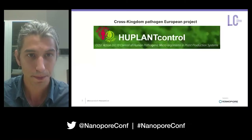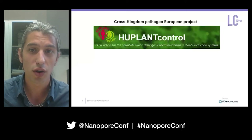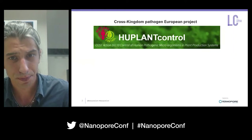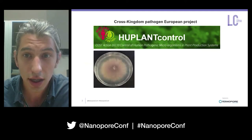Everything starts with a European project called U-Plant Control. This project is finalized to create a pan-European network of scientists who study pathogens able to move from agricultural products to humans. In particular, in our lab, we focus our attention on a specific cross-kingdom pathogen, Fusarium musae, which was first described in 2011.